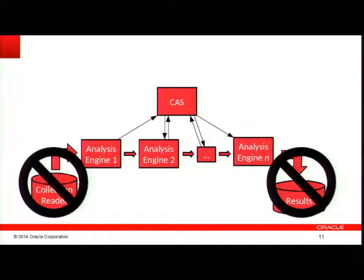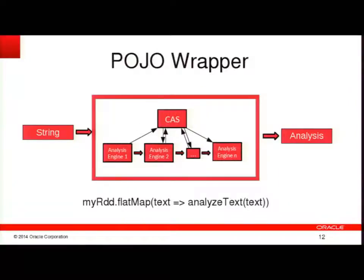So where we want to get to is a simple invocation of UIMA from Spark — moving away from the batch pipeline approach with a collection reader and something on the other end that writes results, and instead encapsulating the whole pipeline into a single method call where a string goes in and on the other side you have a rich object describing the analysis. Given something like that, you can see pretty simply how to do a flatMap on an RDD of strings.